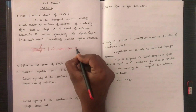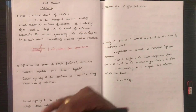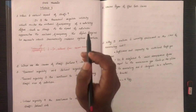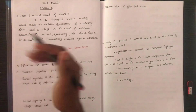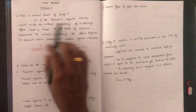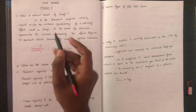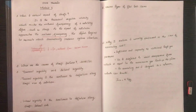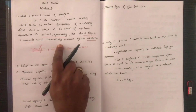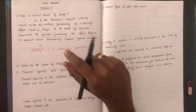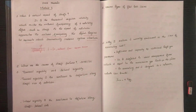At the natural frequency of the body, resonance occurs. It is a theoretical angular velocity which excites the natural frequency of the rotating object such as a shaft. As the speed of rotation approaches the natural frequency, the object begins to resonate, which dramatically increases the system vibration.